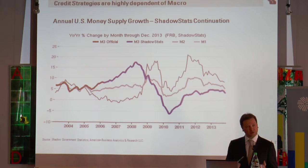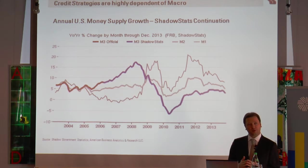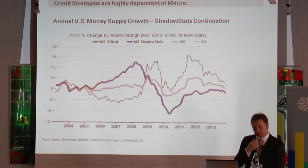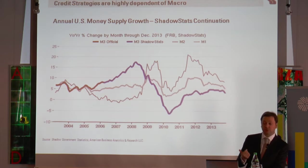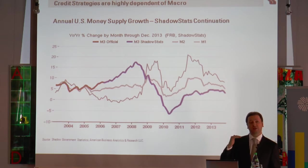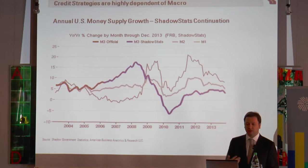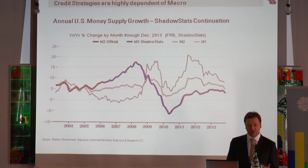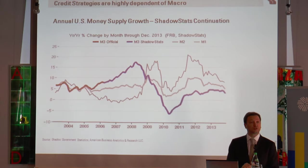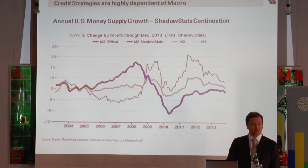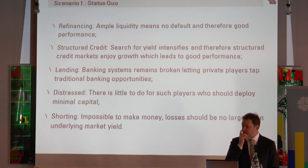So the three scenarios are the following. First: they are not able to make it happen — we stay with high M1 above M3, velocity is not restarting, banks are not relending, and they continue to use quantitative easing to maintain the economy — a status quo scenario. Second: they lose control, either because the economy restarts too strong and they can't brake fast enough, or they brake too fast. Third: they manage to make M1 land on M3 effectively. All the strategies react differently to these three scenarios.